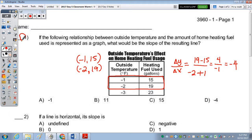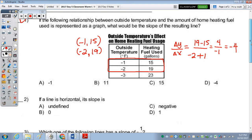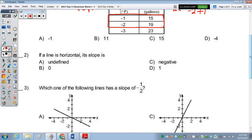Number two, if a line is horizontal, so the horizon goes left to right, the slope is 0, B.